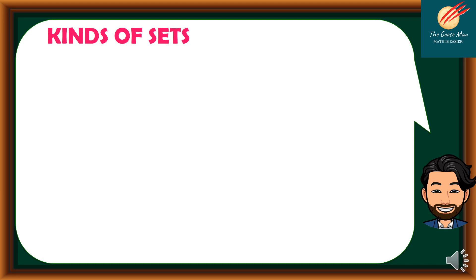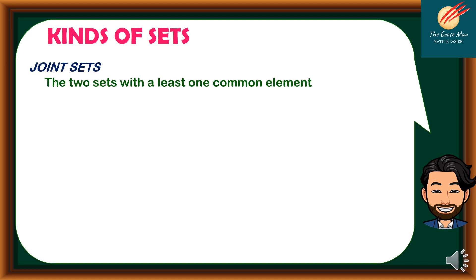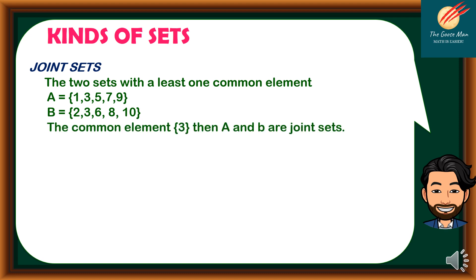Let's move on to kinds of sets. The first one is joint sets — two sets with at least one common element. For instance, A = {1, 3, 5, 7, 9} and B = {2, 3, 6, 8, 10}. Notice that the common element is 3, so A and B are joint sets.